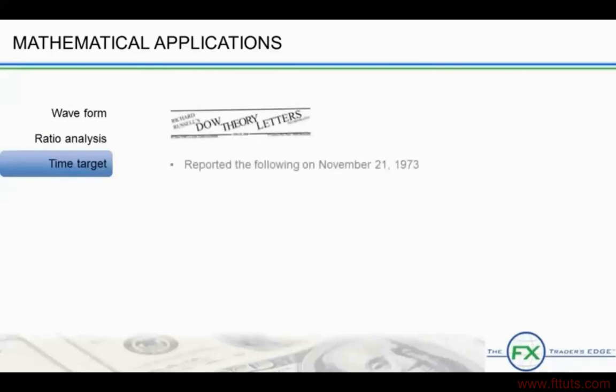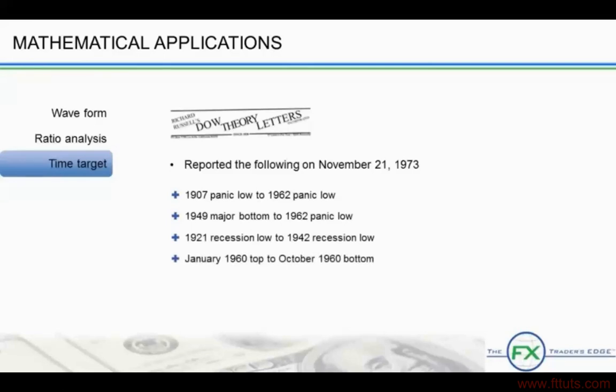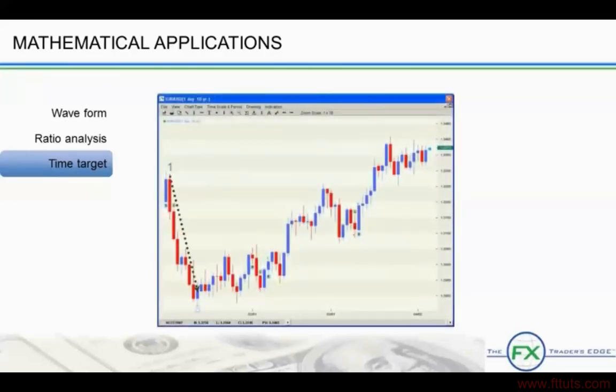Finally, a third way that Fibonacci sequences are used is in time targets. Fibonacci time relationships exist and provide the time window for terminations of the moves. However, they are harder to predict and these relationships can always be found after the fact. To predict a time target, count forward from significant tops and bottoms. For example, on a daily chart from a cycle top or bottom. Future tops or bottoms will occur on Fibonacci days 13, 21, 34, 55, 89, or 144 days into the future. The ideal situation occurs when waveform, ratio analysis, and time targets come together. This is a very powerful combination of targeting tools.